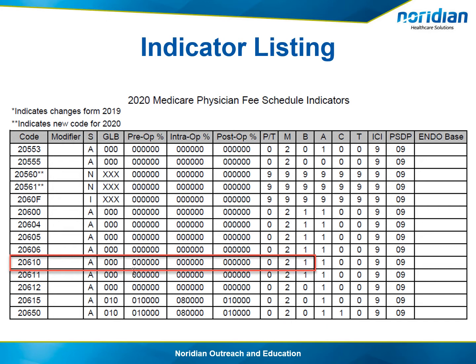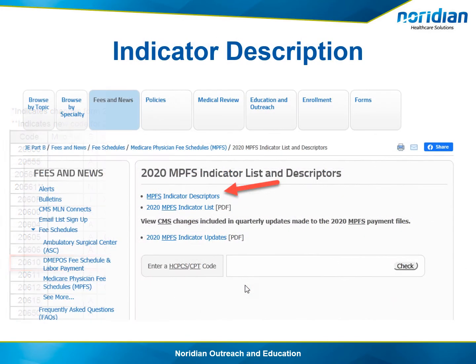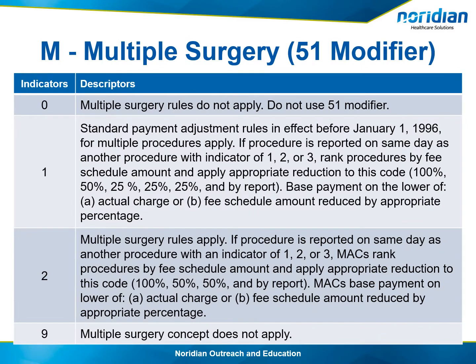On another note, in the global or GLB column, we see 000. Then go back to the previous screen and select MPFS Indicator Descriptions. Under M or multiple surgery, if the indicator is 2, multiple surgery rules apply and allowance is based on 100% for the first code and 50% for the second.